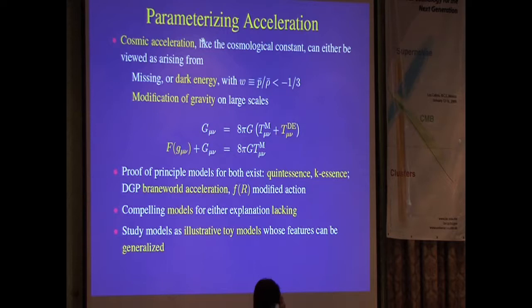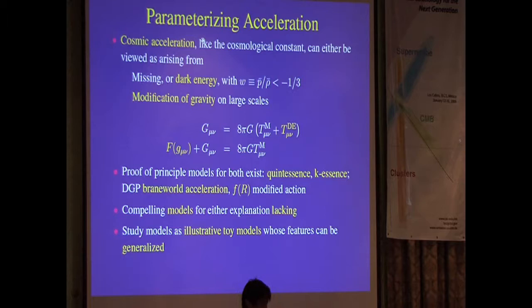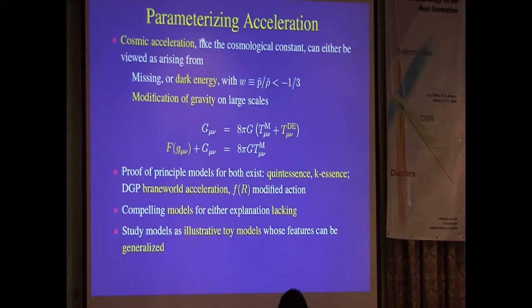Proof-of-principle models include braneworld modifications to gravity and modifications of the action. I put these on equal footing — they're toy models. No one has come up with a compelling explanation of cosmic acceleration; we're using these toy models to understand what we're probing about cosmic acceleration in the observations. That's my perspective.